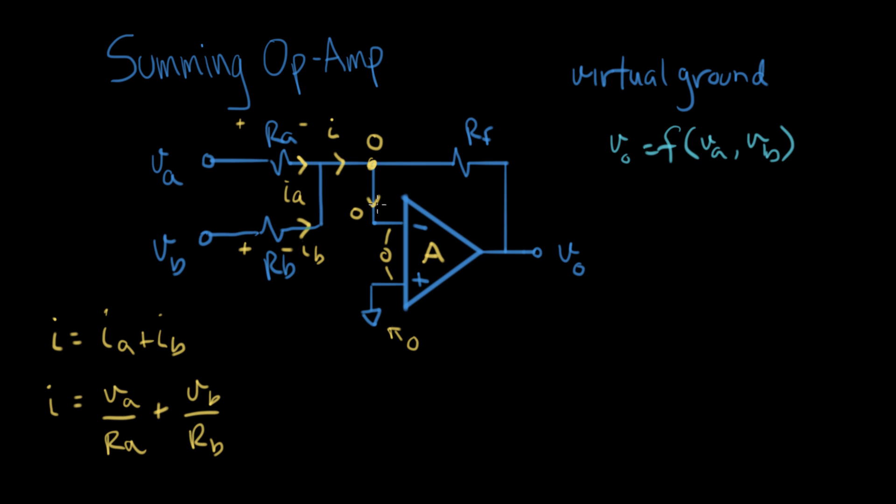Now because this current is zero, we know this current is I. If I is going into RF, let's write an expression for I in terms of RF and this voltage. What is this voltage? This is zero volts on this node, and on this side it's Vout. So the current equals zero minus Vout, or minus Vout divided by RF. That's Ohm's Law for this resistor.